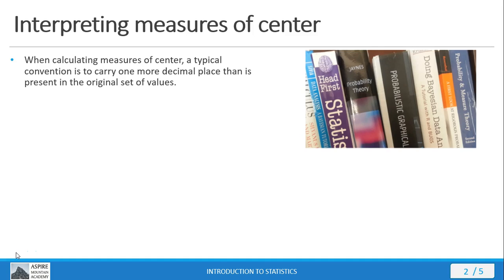Now, keep in mind, a typical convention when calculating measures of center is to carry one more decimal place than is present in the original data set. If my original set of values are rounded to two decimal places, then the convention would be to calculate a mean value to three decimal places. So just use one more decimal place than what you use in the actual data set itself.